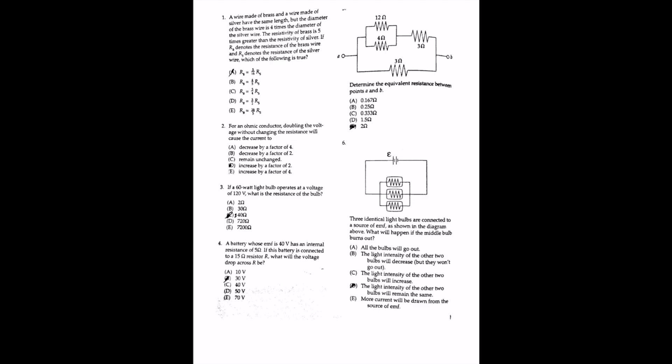For the first question, a wire made of brass and a wire made of silver have the same length, but the diameter of the brass wire is four times the diameter of the silver wire. The resistivity of brass is five times that of silver. If R_B denotes the resistance of brass and R_S that of silver, which of the following is true?